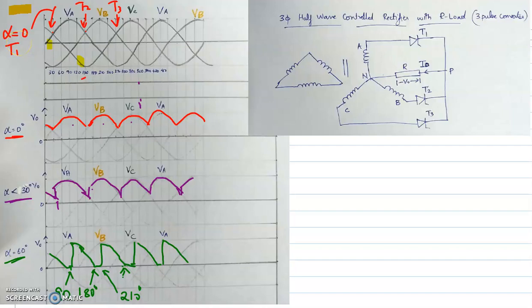This is a continuation of the lecture related to the working of a three-phase half-wave rectifier with resistive load. We will concentrate on two cases: one where the firing angle alpha is less than 30 degrees, and the other where the firing angle is greater than 30 degrees.